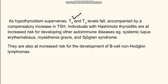Also, like other autoimmune diseases, Hashimoto's thyroiditis can be associated with other autoimmune diseases like SLE, myasthenia gravis, and Sjögren's syndrome. And because the lymphocytes are involved and can even form secondary lymph node-like structures, there can be an increased risk of development of various lymphomas in this case.